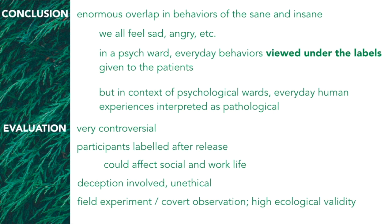The conclusion of the experiment is that there is an enormous overlap in behaviors of the sane and insane, and in a psychiatric ward everyday behaviors are viewed under the labels given to the patient — like a priming effect or confirmation bias. If you think a person has schizophrenia, you find reasons why they have schizophrenia even if they don't. Everyday human experiences are interpreted as pathological. An evaluation of this study is that it was very controversial, as the participants were labeled after release, which could lead to stigmatization and affect their social and work life. There was deception involved, making it very unethical. As a field experiment and covert observation, it does have high ecological validity and it led to many breakthroughs in abnormal psychology.